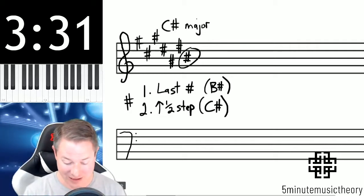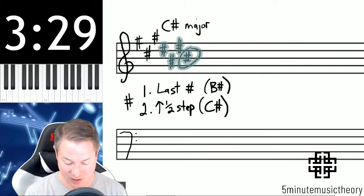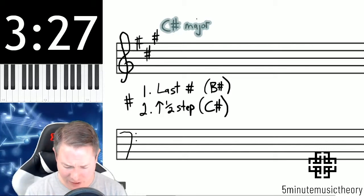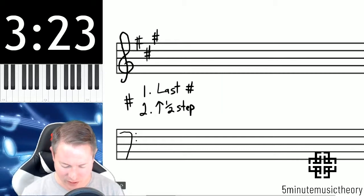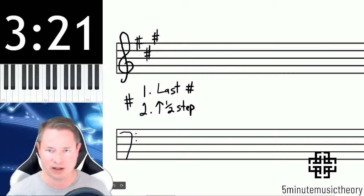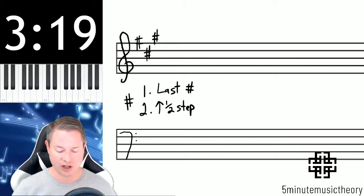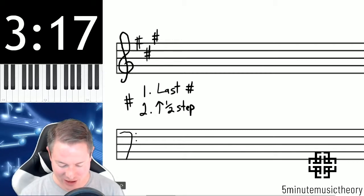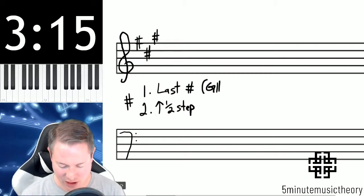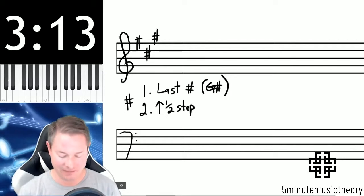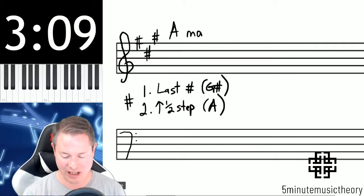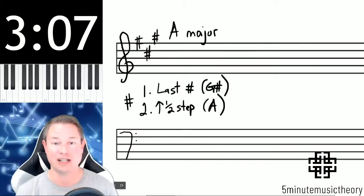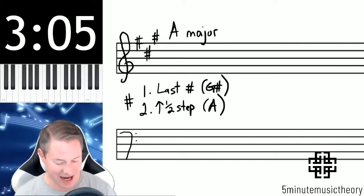And this trick works for all the keys that have sharps. How about let's do one with fewer sharps. Follow the same steps, and we'll end up with the correct answer if we do it correctly. So we have three sharps here on the screen now, F sharp, C sharp, and G sharp. The last sharp that I just said was G sharp. Go up a half step from G sharp, and you end up with an A. Therefore, the major key associated with this key signature is A major.